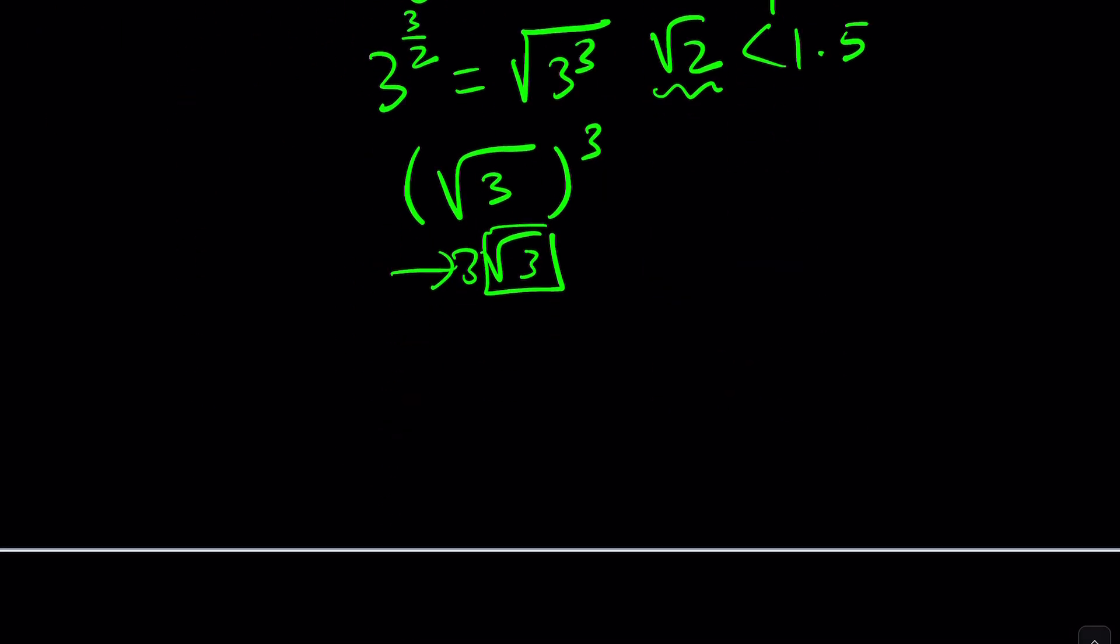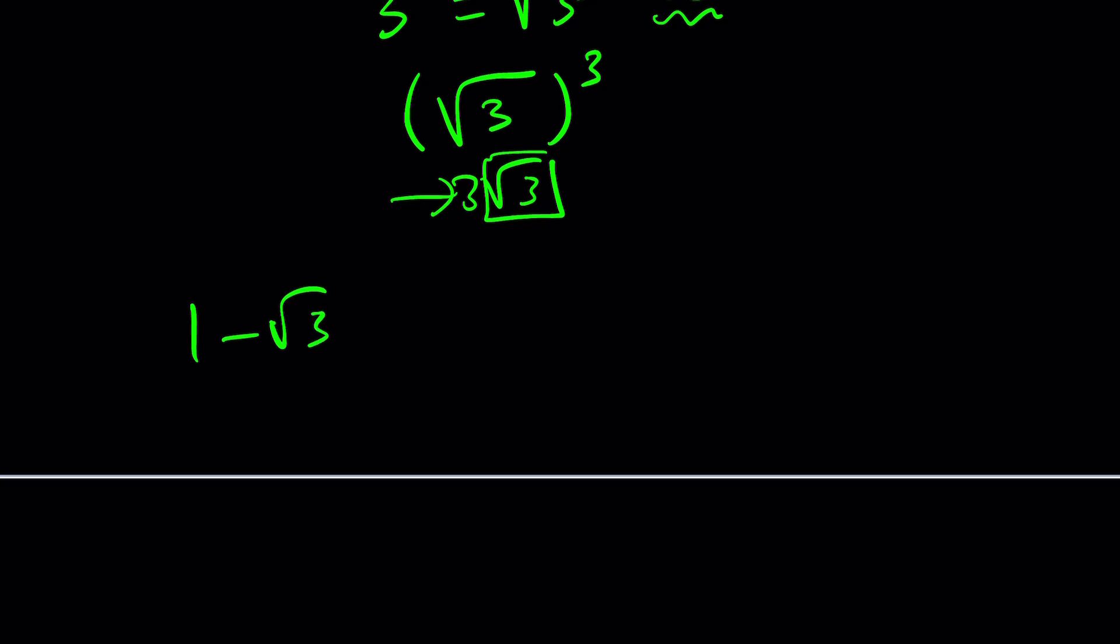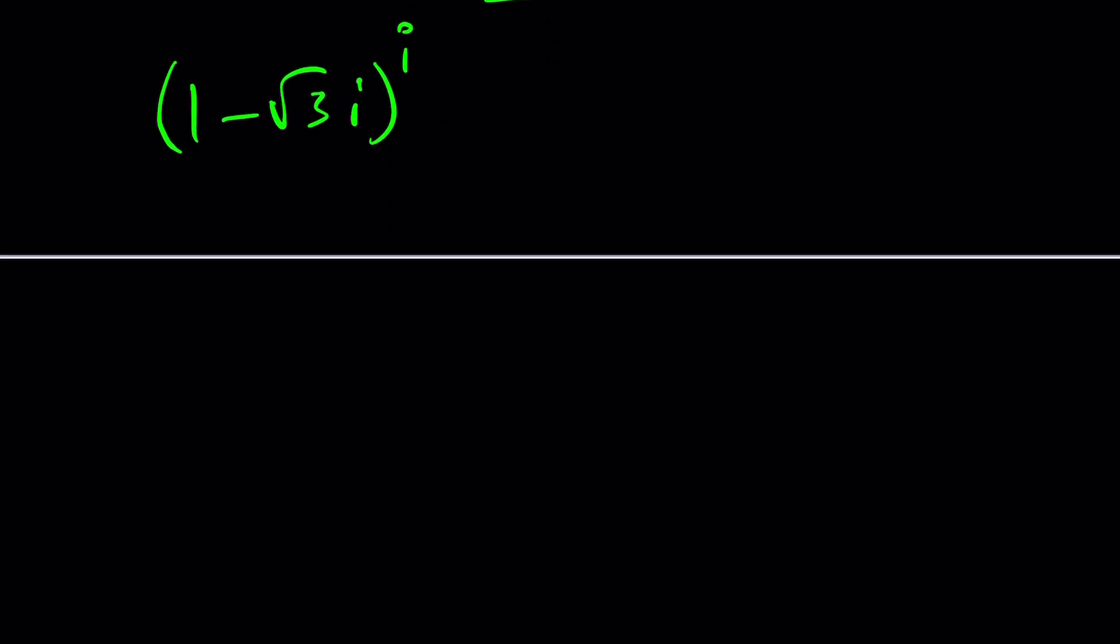So here's what we're going to do we're going to go ahead and rewrite the problem and then we're going to go back to the definition of a complex exponential. In other words how does complex exponentiation work? And here's how it works. If you have z to the power w where z and w are both complex numbers, this applies to real numbers as well, z to the w can be written as e to the power w ln z.